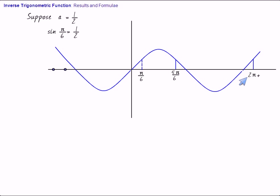There is a value here also, 2 pi plus pi by 6, and then 2 pi plus 5 pi by 6. Which value is nearest to origin? Pi by 6. Thus, sine inverse half equals pi by 6.